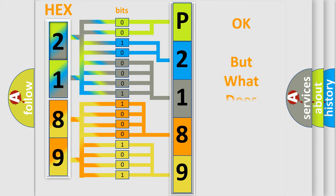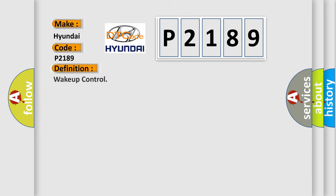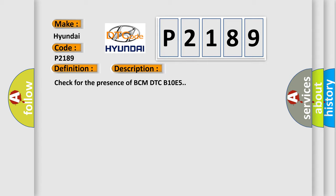The number itself does not make sense to us if we cannot assign information about what it actually expresses. So, what does the diagnostic trouble code P2189 interpret specifically for Hyundai car manufacturers? The basic definition is: Wake up control. Check for the presence of BCM DTC B10E5.